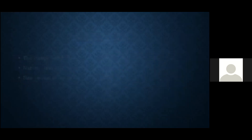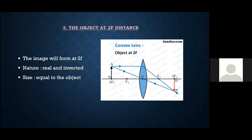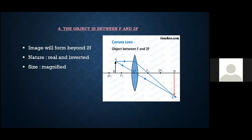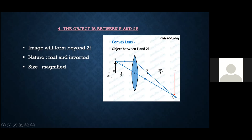Number three: the object is at 2F distance. Using rule one and rule two again, the image will exactly form at 2F, and the image will be inverted, real, and equal to the size of the object. Number four: the object is between F and 2F. We take two rays — one parallel to the principal axis and one going through the optical center. The image will be formed beyond 2F, the nature will be real and inverted, and the size will be magnified.